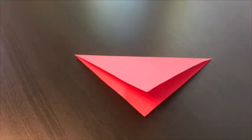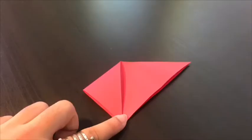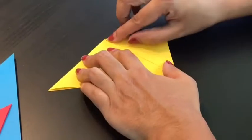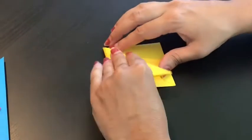Now take one corner of the triangle and fold it in like so. Do this for the other side. You should end up with a square shape. Do this for the rest of your squares.